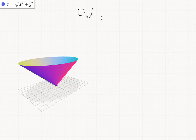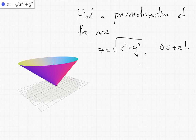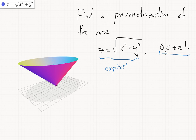Let's find a parametrization of the cone z equals square root of x squared plus y squared, with z between 0 and 1. This is already an explicit equation for the cone — it's describing z as the graph of root x squared plus y squared, except we have this condition on z. Without that condition it would be fine, but this condition on z means our parameter domain r would be a disk.